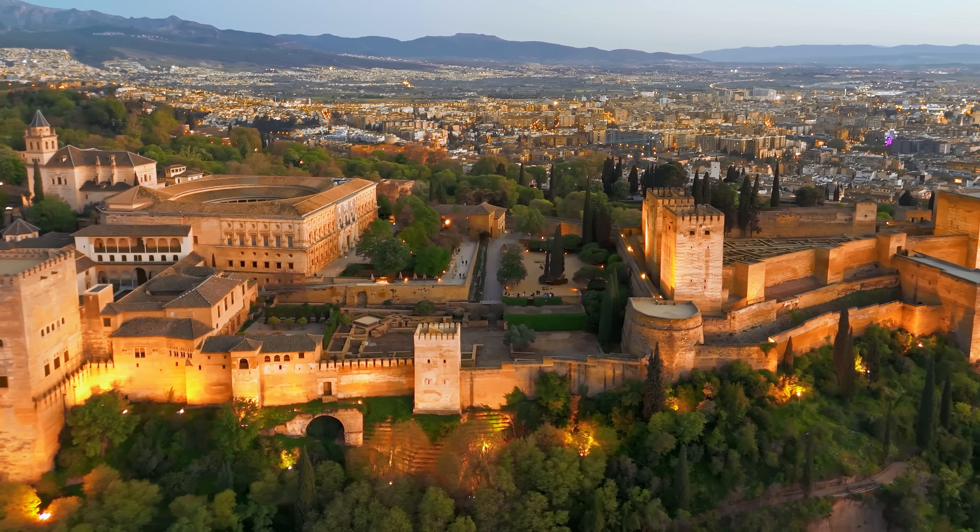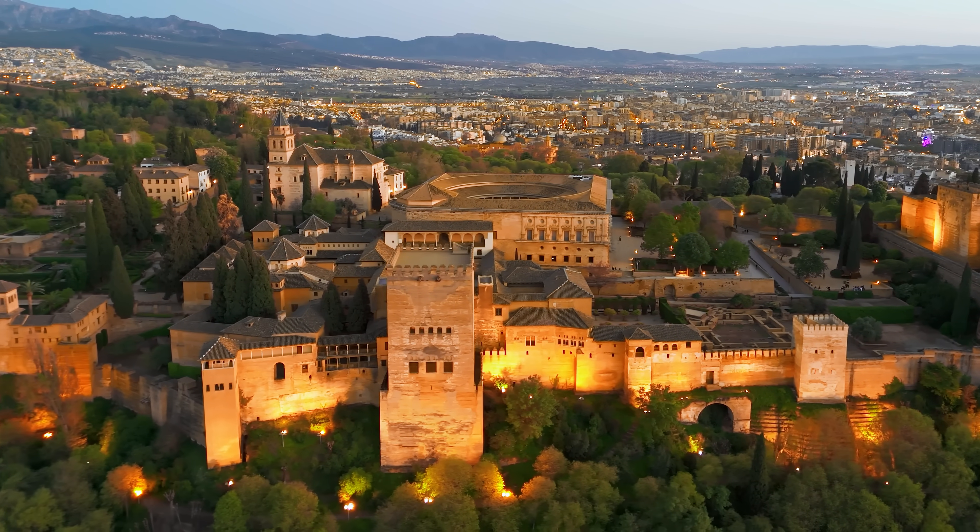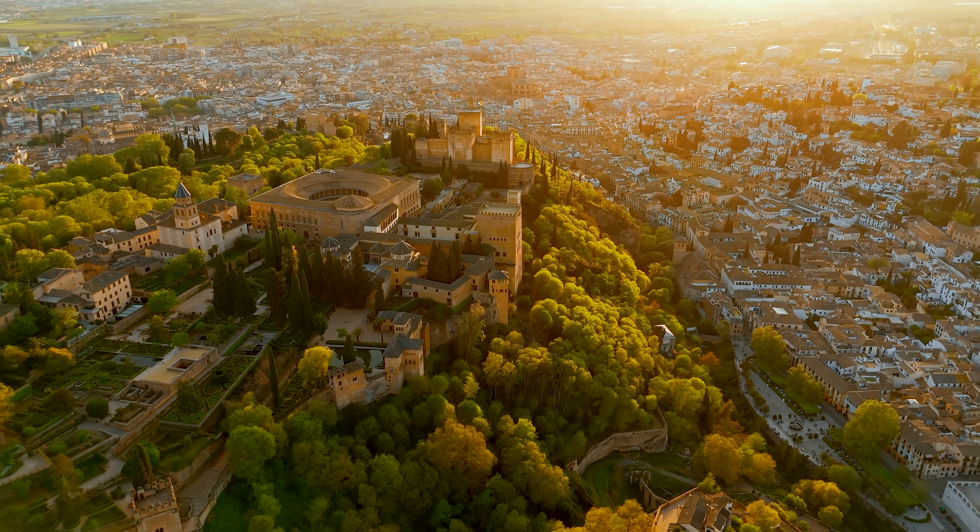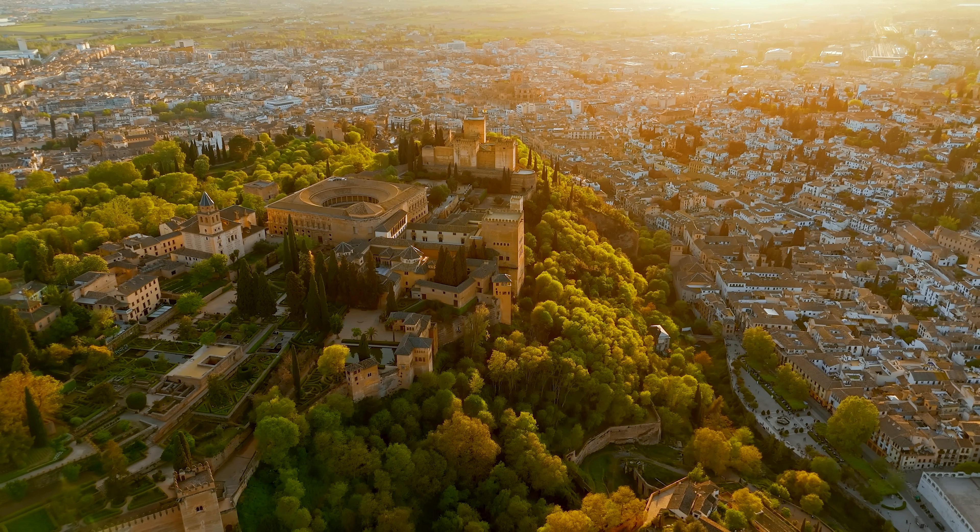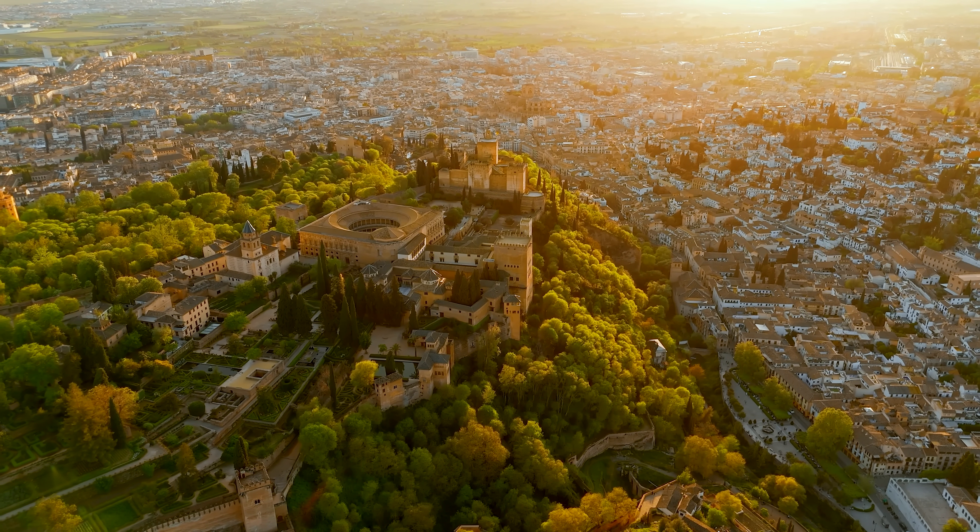On the hill above Granada, Spain sits the Alhambra, a medieval palace and fortress complex of the historic Islamic world. Built and modified over centuries, the Alhambra is now a UNESCO World Heritage Site and stands as one of the best preserved palaces in the world.